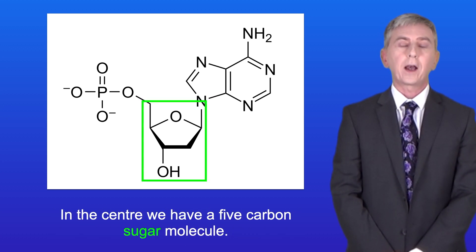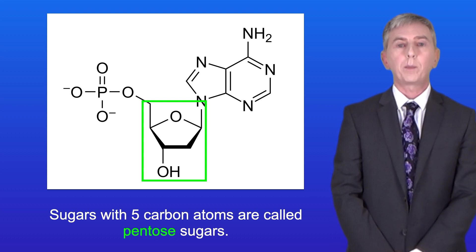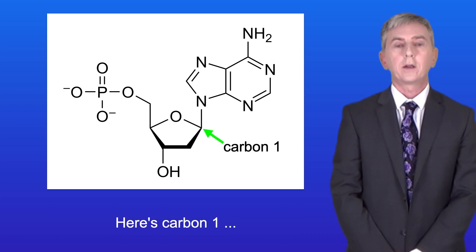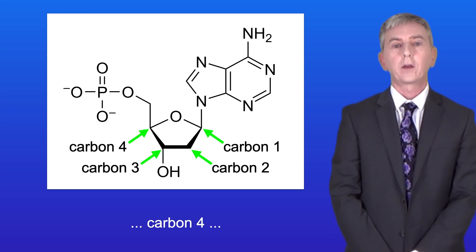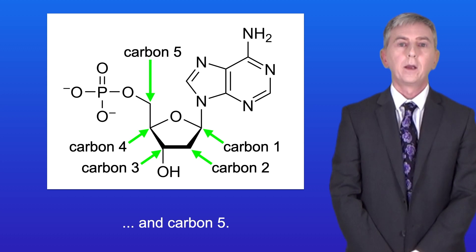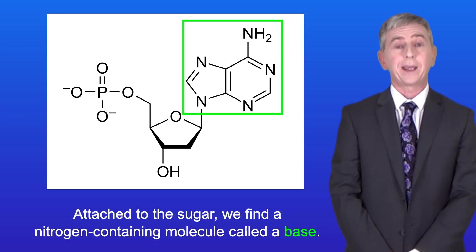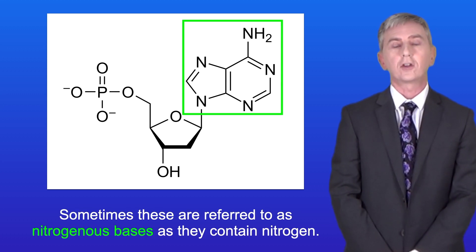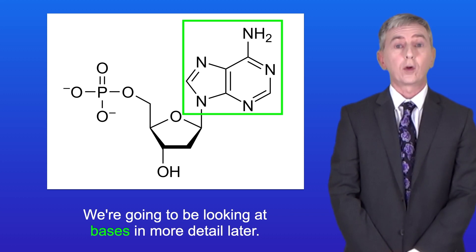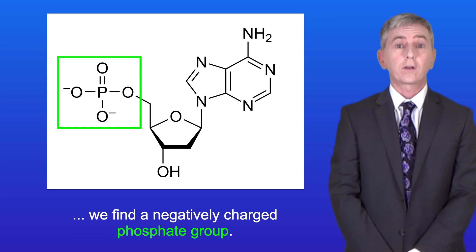In the center, we have a five-carbon sugar molecule. Sugars with five carbon atoms are called pentose sugars, with carbons 1 through 5. Attached to the sugar, we find a nitrogen-containing molecule called a base. Sometimes these are referred to as nitrogenous bases, as they contain nitrogen, and we're going to be looking at bases in more detail later. Attached to the other side of the sugar molecule, we find a negatively charged phosphate group.